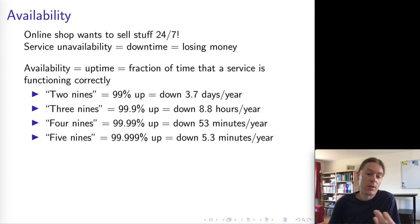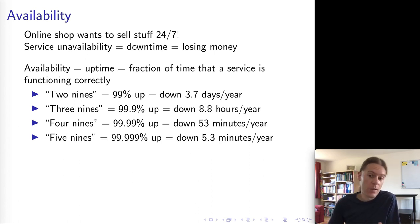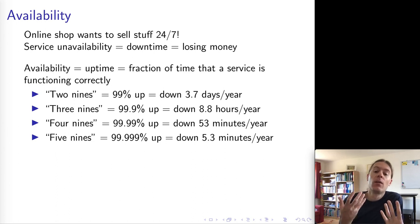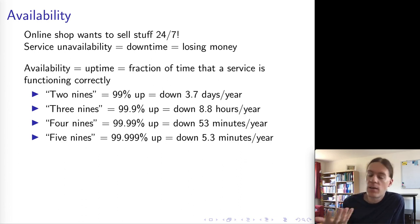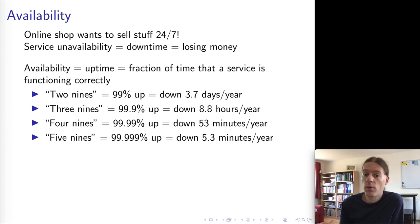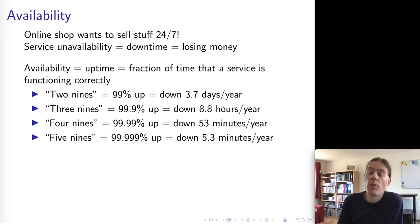In other cases, a service may have contractual relationships with its customers specifying what percentage of time a service needs to be available. The typical model for how we talk about availability is the fraction of time during which a service is functioning correctly. If a service is functioning correctly 99% of the time, that means there might be three to four days a year during which the service is not available in total — though there might be several smaller outages. At 99.9%, you are allowed a maximum of nine hours per year of outage.